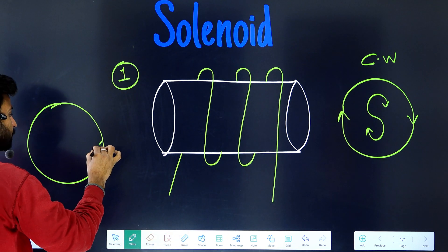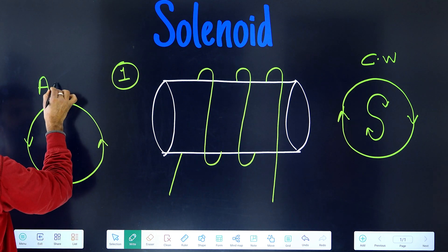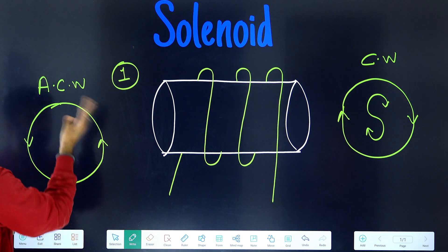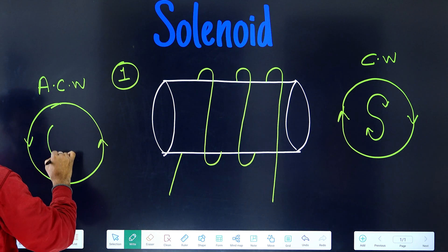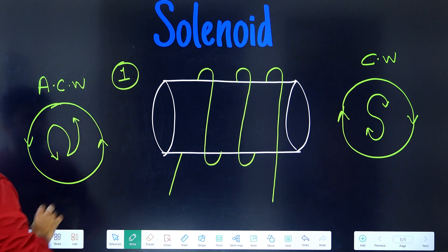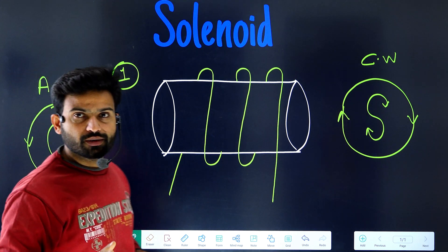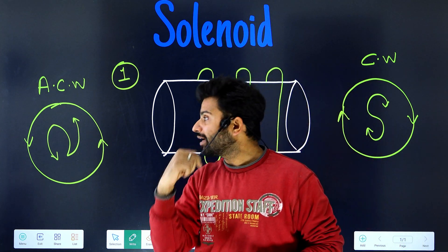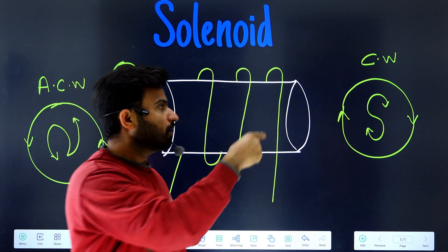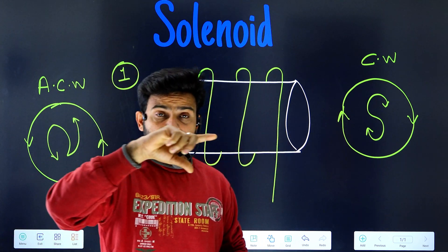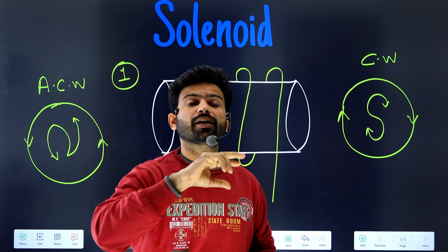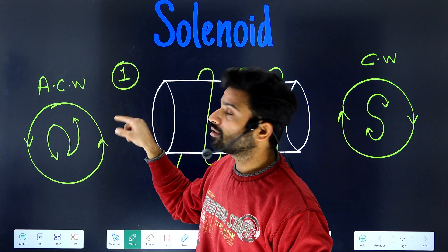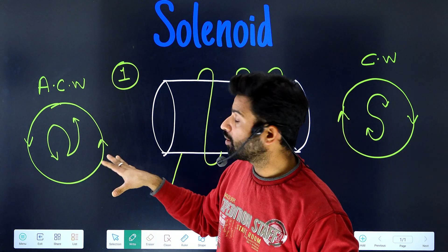Current going in an anticlockwise direction — like this — will be north. I hope you understood how to find out the north pole and south pole using the current direction: clockwise current means south, and anticlockwise current means north.